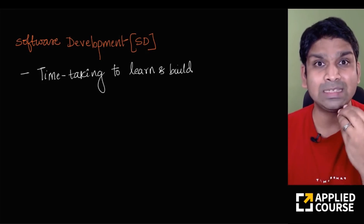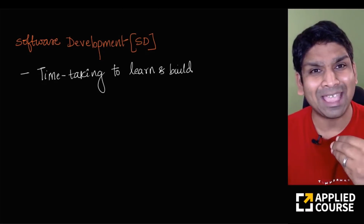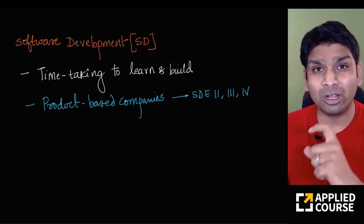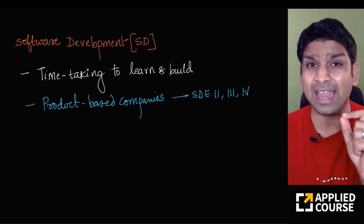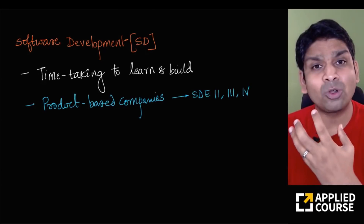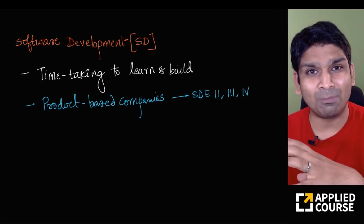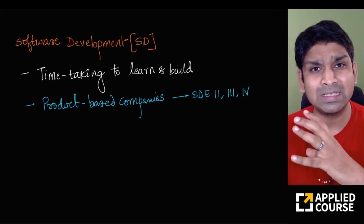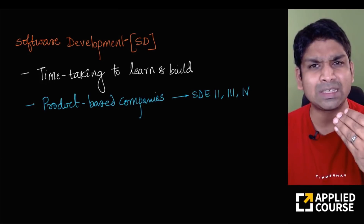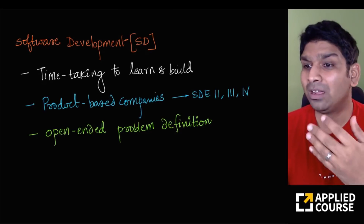You also need software engineering basics: how to test your code, how to work in large teams, and how to deploy your system into production. Good software developers need all the skills from competitive programming plus these additional ones. Building decent software for a reasonably complex problem takes time — there is a lot of learning you only get by getting your hands dirty. In top product-based companies, SDE-2, 3, and 4 roles have a heavy focus on system design, low-level design, and software development.